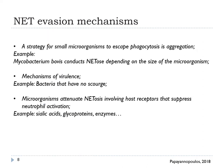A strategy for small microorganisms to escape phagocytosis is aggregation, that is, the ejection of many cells in one location. For example, mycobacteria can induce NETosis depending on the size of the microorganisms. Bacteria that do not have a flagellum cannot cause a powerful oxidative burst to induce NETosis. Microorganisms also attenuate NETosis by engaging host receptors that suppress neutrophil activation, for example through sialic acids, glycoproteins, and enzymes.